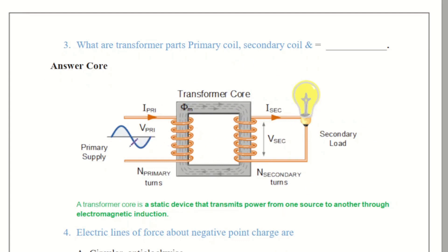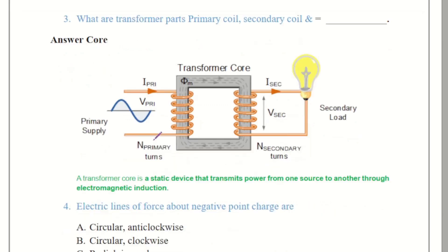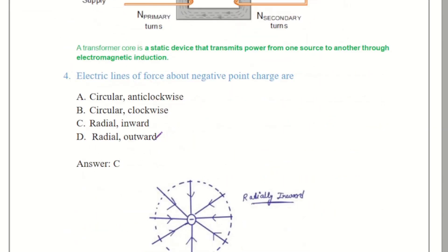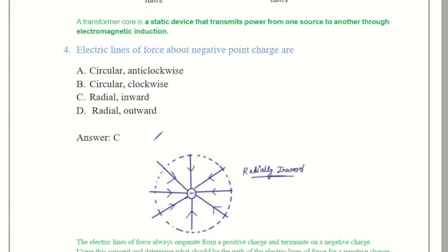Although they have other parts as well but the primary and the basic essential parts are these three. Moving towards the question number 4 that is electric lines of force about negative points charge. So using the concept about the electric lines, the electric lines of force always originate from positive to negative terminal charge. So taking these concepts we are going to be able to answer about the electric lines by these options.